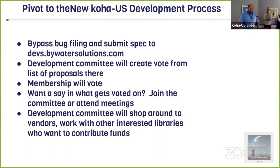The development committee will try to find the vendor to do the work, taking into account factors like timeline and cost. They can also look for other interested libraries to contribute funds, because the less money Koha US spends, the more often they can sponsor developments. There's no set timeline — it doesn't happen just once a year. It's dependent on available funds and existing commitments, so a new vote can happen periodically.